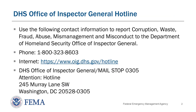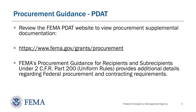To report corruption, waste, fraud, abuse, mismanagement, and/or misconduct, contact the Department of Homeland Security Office of Inspector General by phone at 1-800-323-8603 or via the website or mailing address listed on screen. Procurement requirements are among the most complicated parts of the PA grant process, and noncompliance can result in de-obligation of funding. Please make sure that you are following FEMA's procurement guidance for recipients and subrecipients. Federal requirements for procurement and contracting are described in 2 CFR Part 200. The Procurement Disaster Assistance Team offers training and tools on their website at www.fema.gov/grants/procurement.